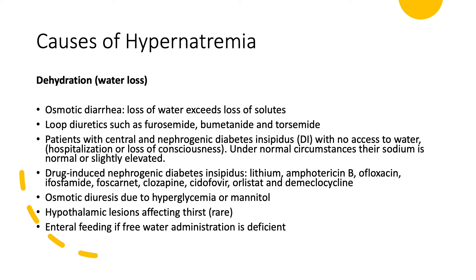Patients with central or nephrogenic DI normally have serum sodium at the upper range of normal — maybe 144, 145, 146 — but if their access to water is cut off, this is when you'll see full-blown hypernatremia. For example, someone with central or nephrogenic DI making three to four liters of urine and used to drinking that much — then they're admitted for surgery, put NPO with no access to water — and then you get hypernatremia. Pay attention to that.